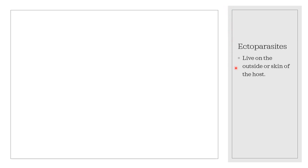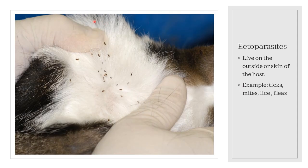We can also classify parasites depending on their location on the host. Parasites known as ectoparasites live on the outside — on the skin of the host. Examples of these parasites are ticks, mites, lice, and fleas. An example shown in this diagram is a cat flea, Ctenocephalides felis, on a severely flea-infested and anemic cat.